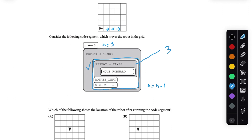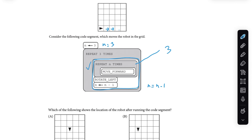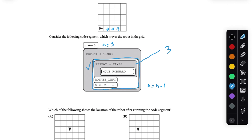Then we rotate left. Now we've rotated left, and then we set n equal to n minus one. So our n is now equal to two. We did the first loop of the outer logic — now we need to do that two more times.